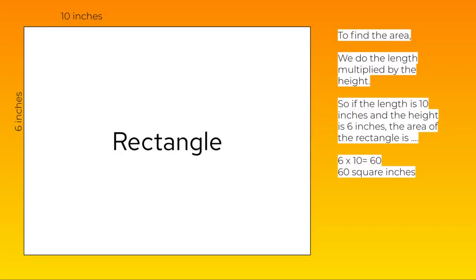Now let's look at a rectangle. To find the area, we do the length multiplied by the height. So if the length is 10 inches and the height is 6 inches, the area of the rectangle is 6 times 10 equals 60, so 60 square inches.